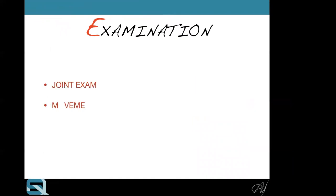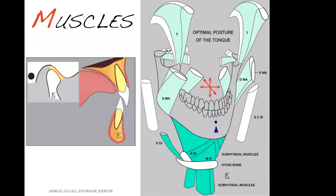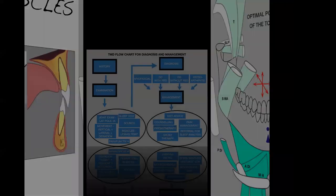On examination, we do a joint exam, movement analysis, sound analysis, and muscle examination. I've created a TMD flowchart for diagnosis and management. On the left: history and examination — we get jigsaw pieces from a joint exam, movement assessment, sound, muscles, and sleep tests. From that we have a diagnosis, and if we have a diagnosis, we have a management plan.